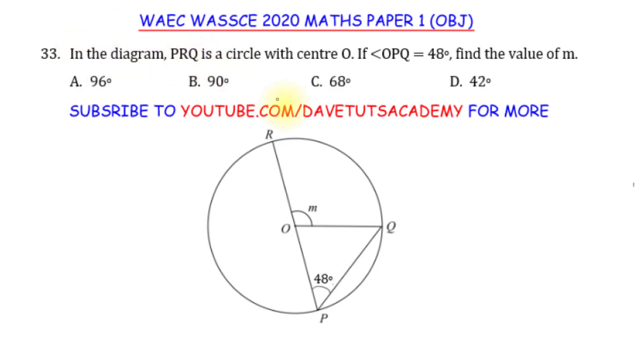In the diagram, PRQ is a circle with center O. If angle OPQ, this angle here, is 48 degrees, we have to find the value of M. So our task in this particular question is to find the value of angle M here.